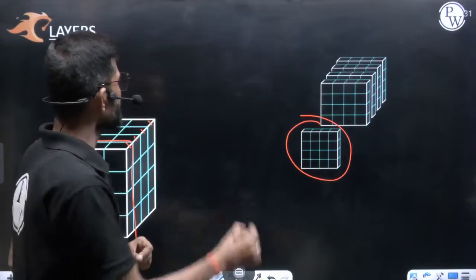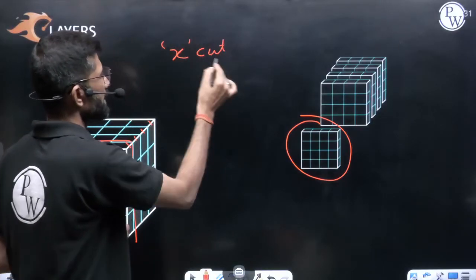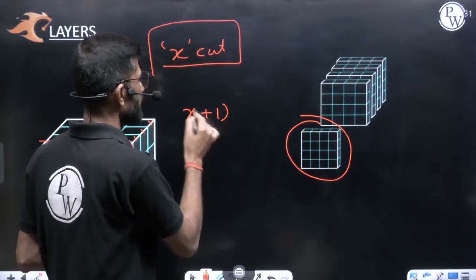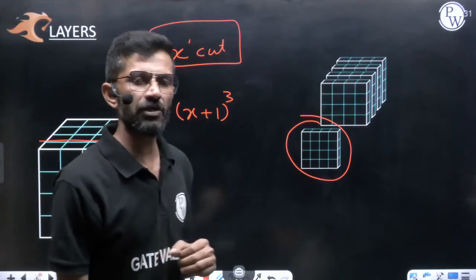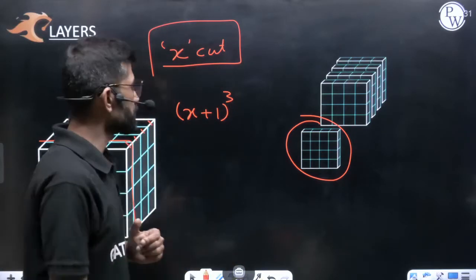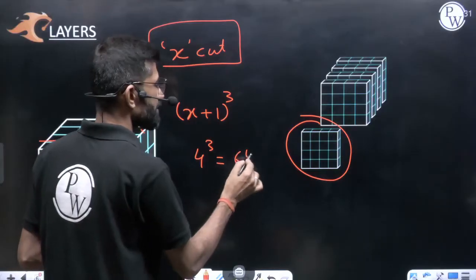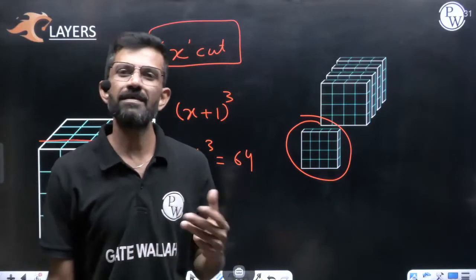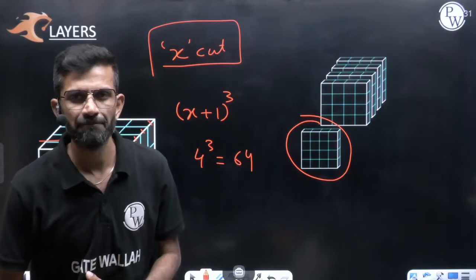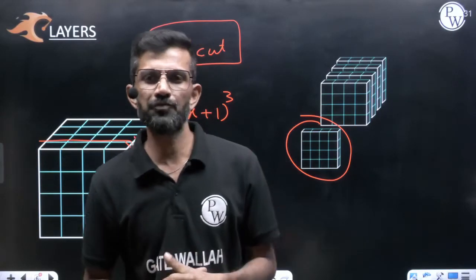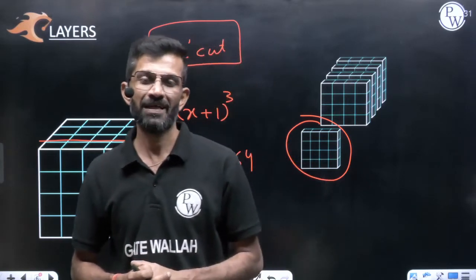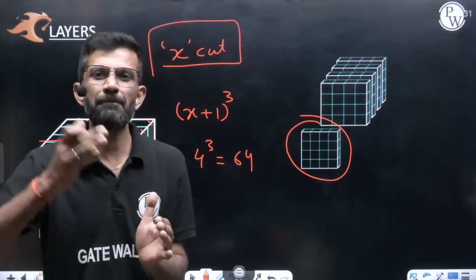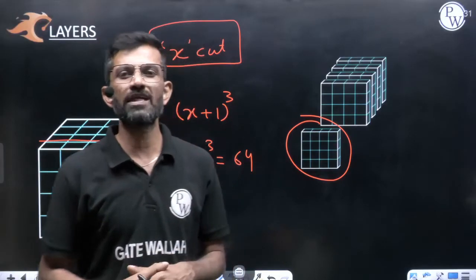Or, try to understand: if I give x cuts on each edge, the number of cubes formed will be (x+1)³. With 3 cuts: (3+1)³ = 4³ = 64. If I give 5 cuts, it will be 6³ = 216. If I give 8 cuts, it will be 9³ = 729. If I give 9 cuts, the number formed will be 10³ = 1000. Whatever cuts you give, add 1 and raise to the power of 3 to find the total number of smaller cubes formed.